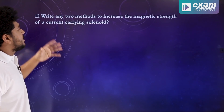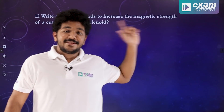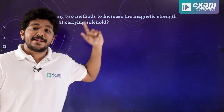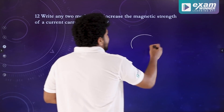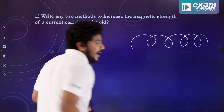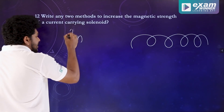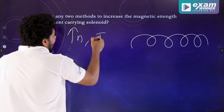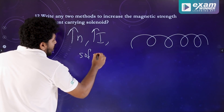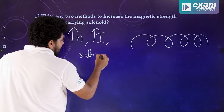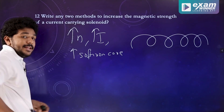Write any two methods to increase the magnetic strength of a current-carrying conductor. We should learn these methods. There is a number of turns increase, there is a current increase, there is a soft iron core. It is called soft iron core. It increases the magnetic field.